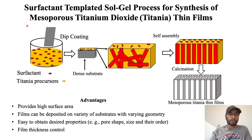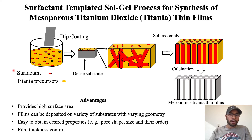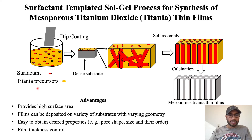Titanium dioxide is also called titania. Nanostructure titania is formed using surfactant templating, where the surfactant, which is basically a block polymer, functions as a template. For nanostructure formation, the surfactant molecule, shown as a red particle, and titanium precursors, shown as yellow, are dissolved in a solvent such as ethanol.